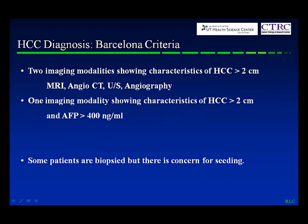When we talk about hepatocellular carcinoma, there is a radiographic diagnostic criteria called the Barcelona criteria. Basically, if you have two different imaging modalities showing the pathognomonic findings for HCC and the lesion is bigger than two centimeters — MRI, angio-CT, ultrasound, or angiography — you don't need to biopsy that tumor. Or you can have just one imaging study if you have an elevated alpha-fetoprotein. The importance of this is that the liver has very high blood flow and isn't the safest place to biopsy. Also, this tumor can seed along biopsy tracks, so you can end up with recurrences along the track or even in the body wall where the needle passed through.